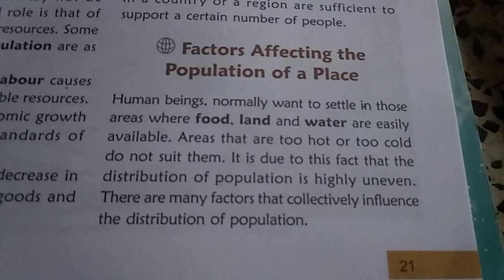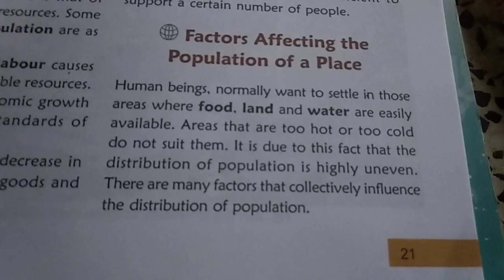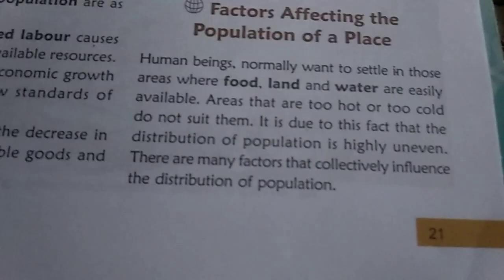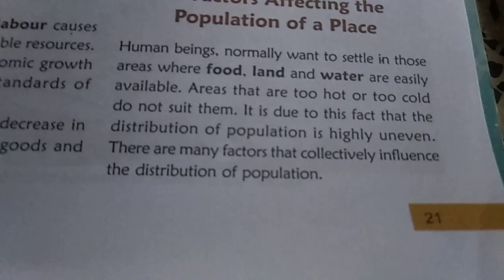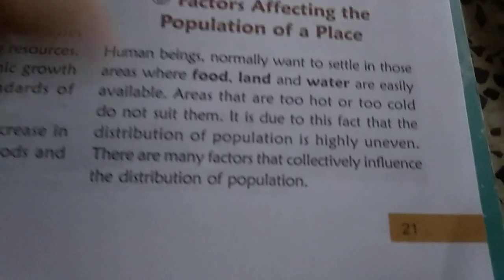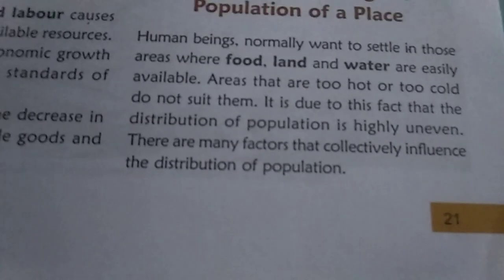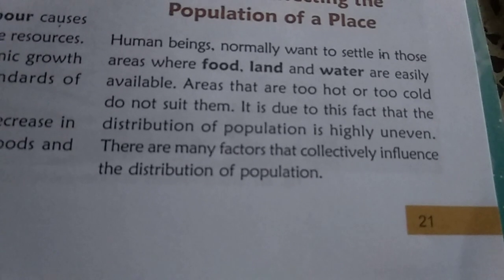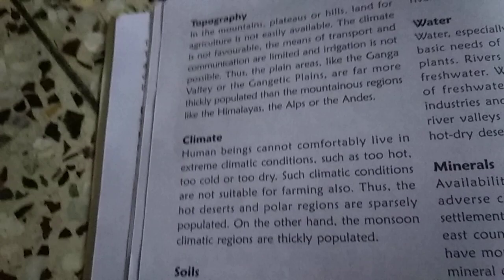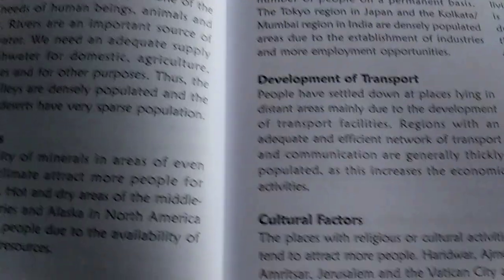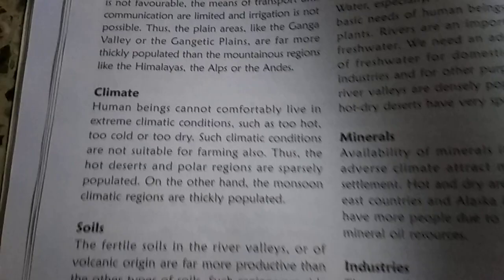Normally, settlements are happening in those areas where food, land, and water are easily available for human beings. Areas which are too hot and cold are not suited for living. That's why the distribution of population is highly uneven. There are factors which influence the distribution of population. The factors are topography, climate, soil, water, minerals, industries, development of transport, and cultural factors. These are all responsible for the population settling in any place.